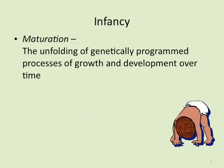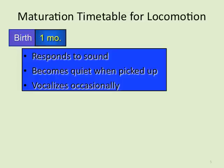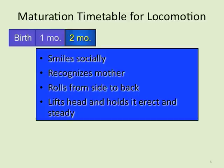Maturation is the unfolding of a genetically programmed process of growth and development over time. We all go through it — from babies to children to teenagers to adults. For humans, maturation starts at birth. At one month old, babies can respond to sound, become quiet when picked up, and vocalize occasionally. In the second month, a baby can smile socially, recognize its mother, roll from side to back, and lift and hold its head erect and steady.